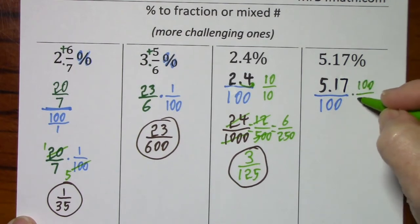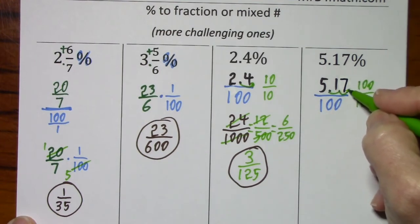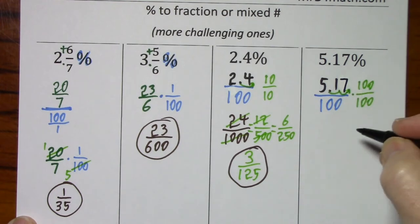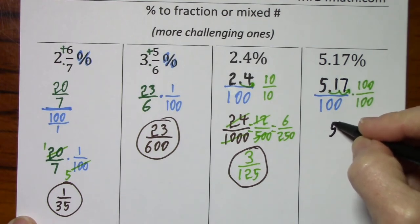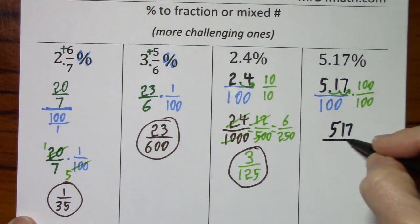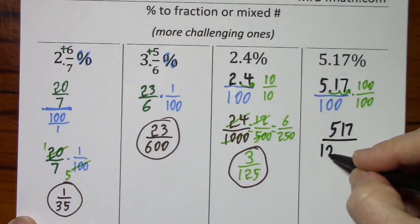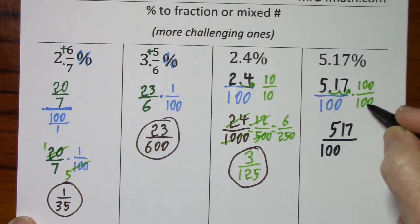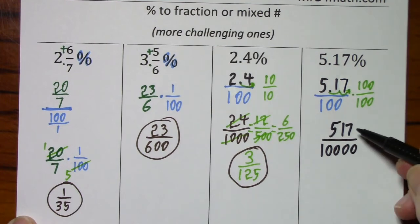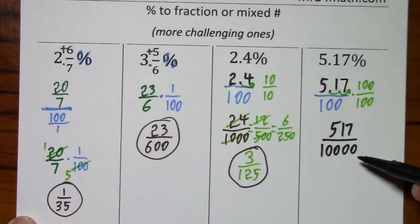And to keep things balanced, you have to do the same to the denominator. So this times 100 is going to move it two places. This gives us 517, 100 times 100, you just tack on these next two zeros. And I'm sure you're glad that this will not reduce. There's no common factor.